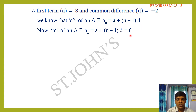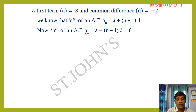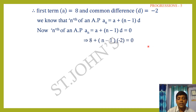So 10 − 2n = 0, meaning −2n = −10, so 2n = 10, therefore n = 10/2 = 5.